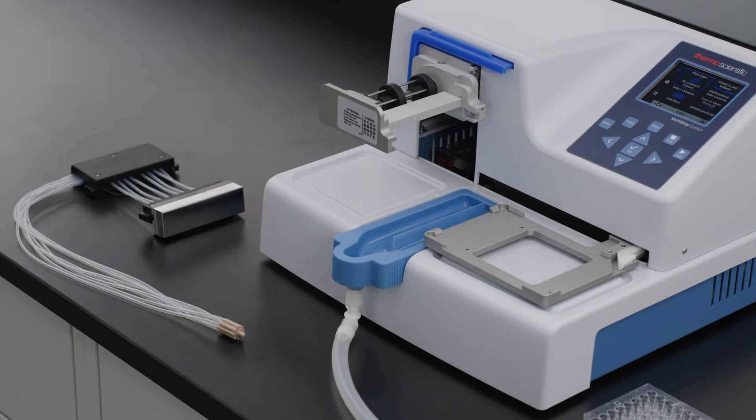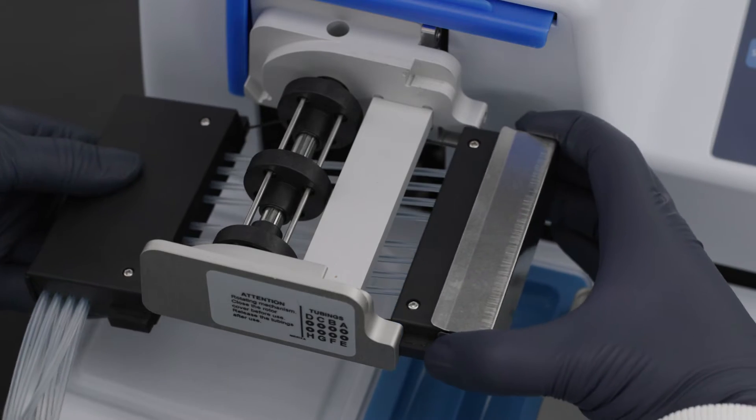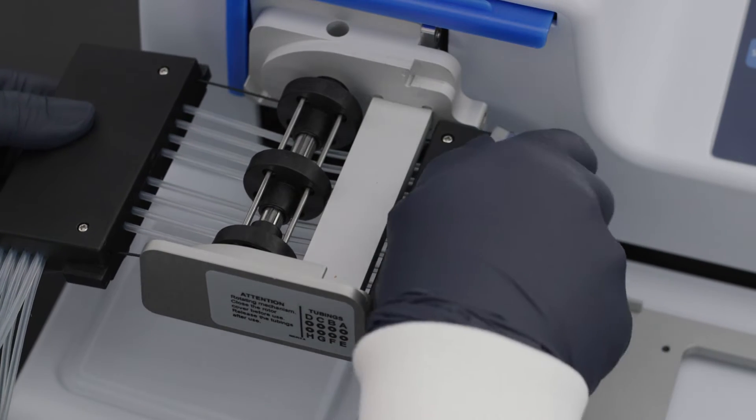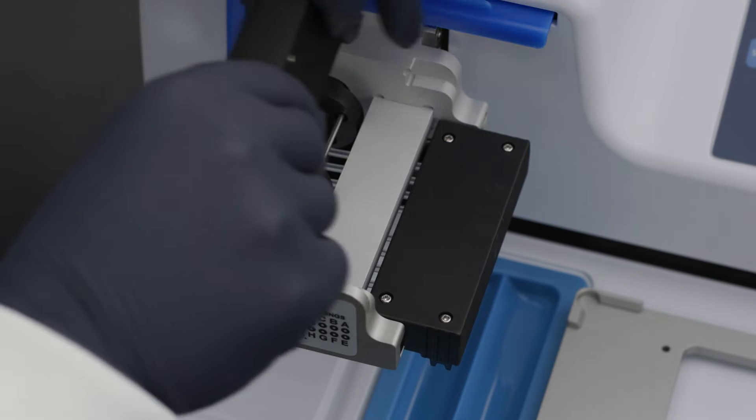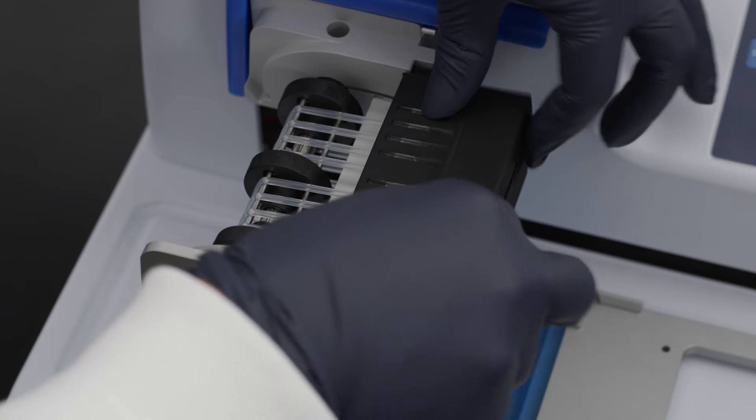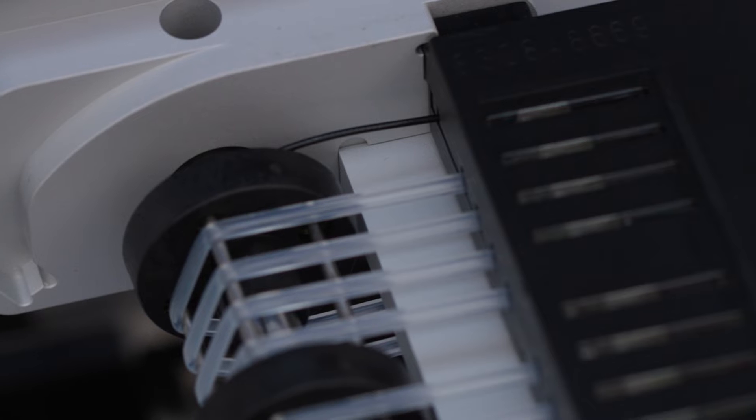To get started, first install the dispensing cassette. Insert the lower part of the cassette into the lower slots of the pump body, then carefully wrap the tubing around the rotor and insert it into the upper slots of the pump body. The tension-limiting wires should loosely fit around the rotor shaft.